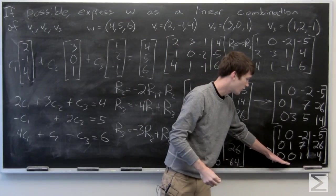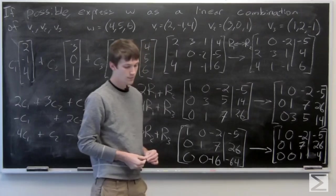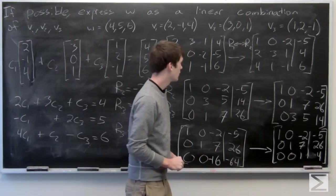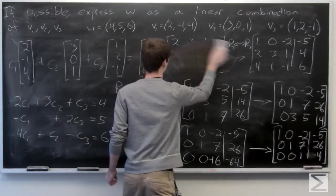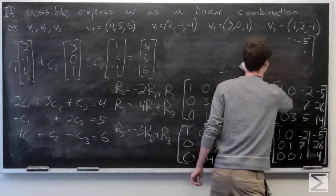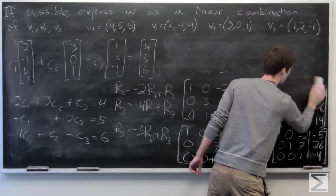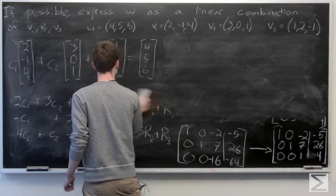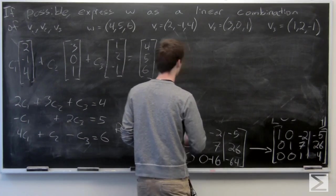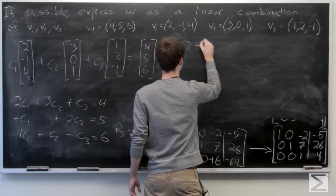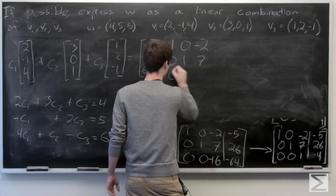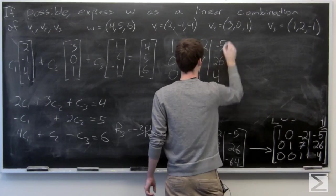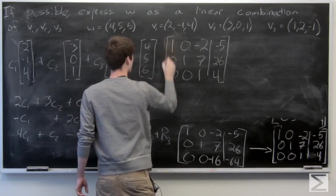So we have our third row turns to (0, 0, 1, 4), and now we can go ahead and get rid of the 7 and the negative 2 in our third column. So I'll just make some space.